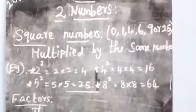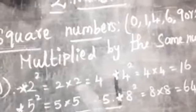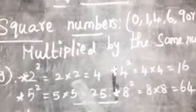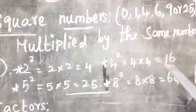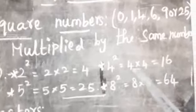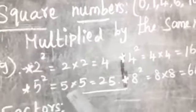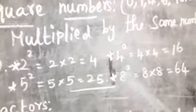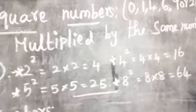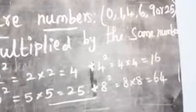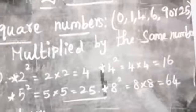Now look at the examples. Two squared: two twos are four — multiply by the same number. Four squared: four fours are sixteen. Five squared: five fives are twenty-five. Eight squared: eight eights are sixty-four. Six squared: six sixes are thirty-six.